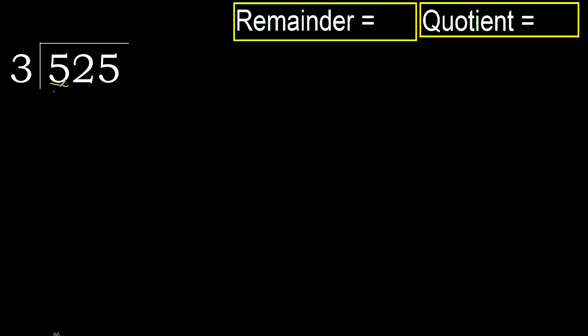5 is not less. Therefore, with 5, multiply 3 by which number is nearest to 5 but not greater. 3 multiply by 2 is 6 — 6 is greater. Multiply by 1: 3 is not greater. Ok. 5 minus 3 is 2. Next.